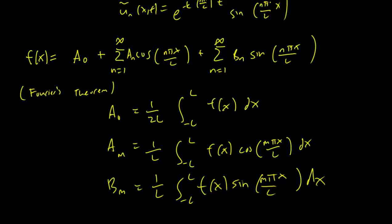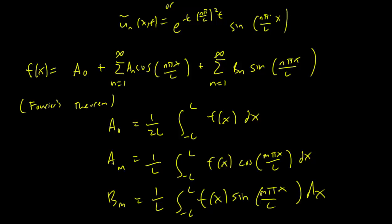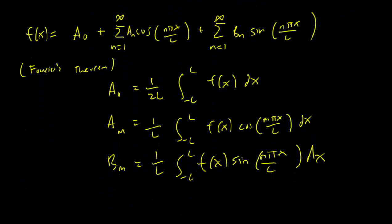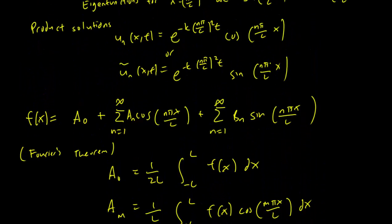And once we do that, we can expand out our initial condition f(x) in terms of sine and cosine in this way, and then figure out the appropriate sum of u_n's and ũ_n's to solve the initial heat problem as in the previous cases.